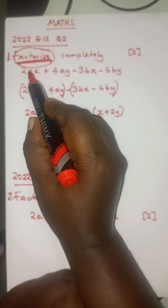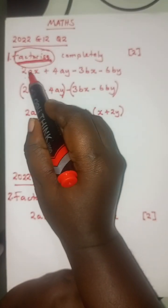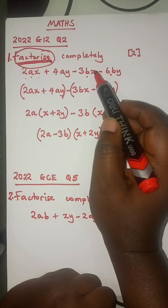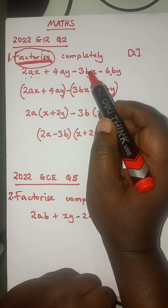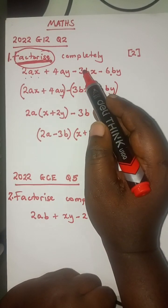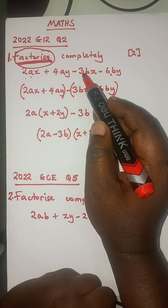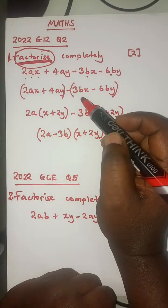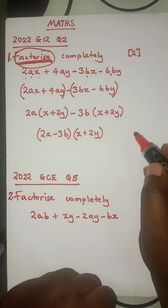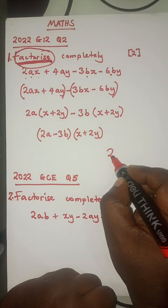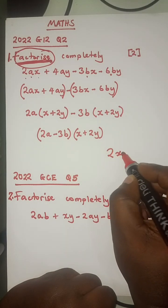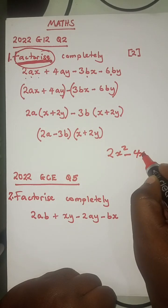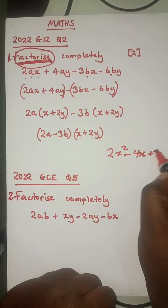So when we see four terms — 1, 2, 3, 4 — just know that this type of factorization is by grouping. We also have quadratic factorization. That one has got three terms, for example 2X squared minus 4X plus 7.